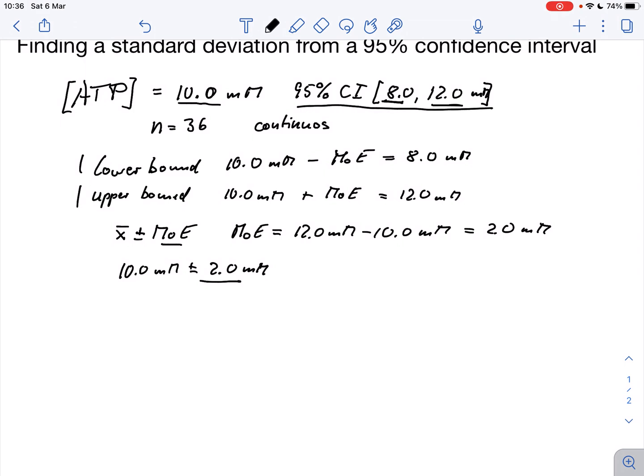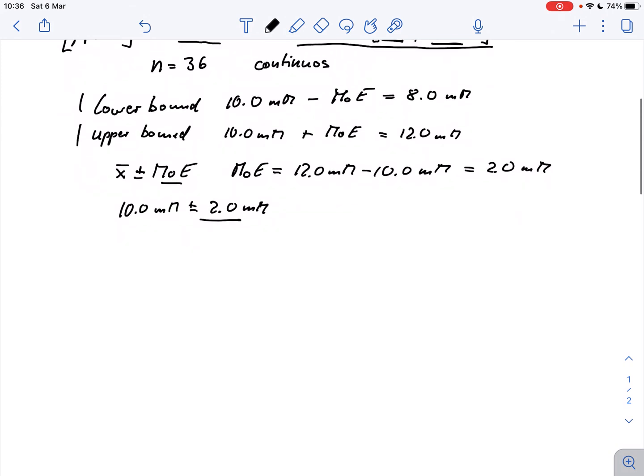So okay, we've got the margin of error and we know that if that follows a t distribution then we have the equation: the margin of error equals a critical t value, and I abbreviate that with t crit, times the sample standard deviation, and that's what we are interested in, divided by the square root of the sample size.